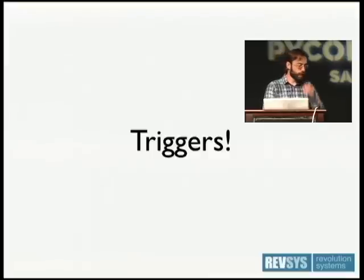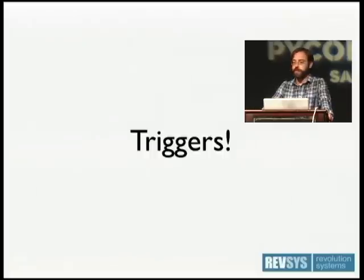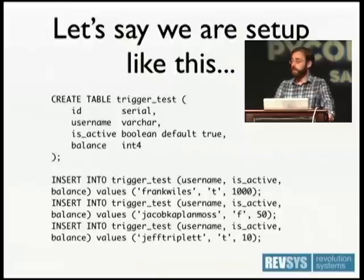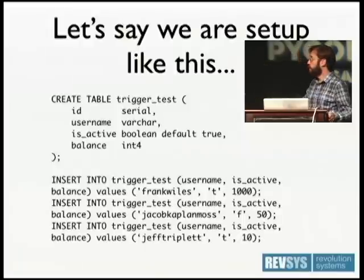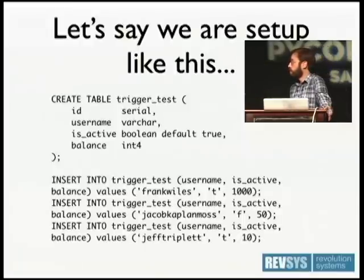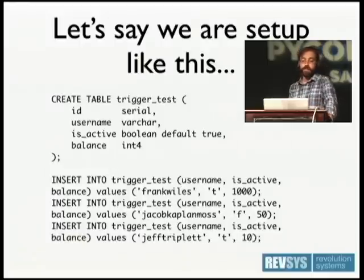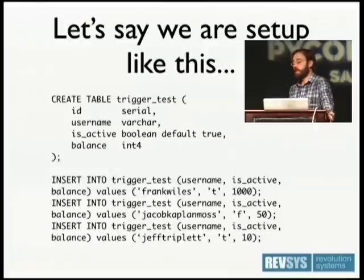Triggers are how you do most of this. While you can use plain stored procedures for simple operations like multiplication, the real fun happens when you start using triggers. Let's say we've got a simple ATM-balance-style table with a username, whether the person is active, and what their balance is. I create entries for me, Jacob, and Jeff — Jeff and I are both active and have a balance, but Jacob's not active, though he does have a balance.